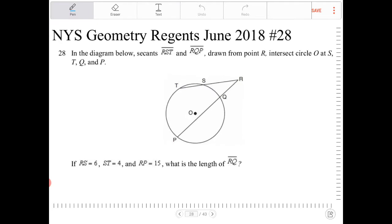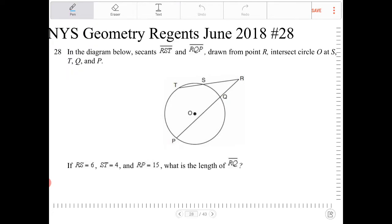If RS is equal to 6, so RS, meaning the segment, is 6. ST is 4. RP is 15, so this entire length is 15.